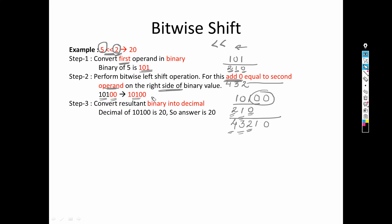This is not the final answer — it must be converted into decimal. Converting 10100 into decimal gives 20. If you are not comfortable with binary-to-decimal conversion, you are requested to go through my previous videos, the links of which are in the description box. Those videos explain how to convert decimal to binary and binary to decimal, including the concept of binary representation of negative numbers.